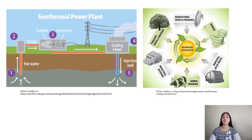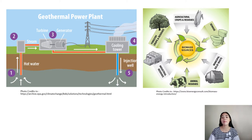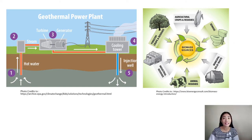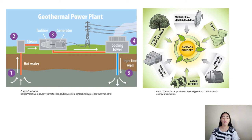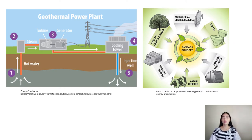In a geothermal power plant, there are two wells drilled one or two miles deep. Hot water is pumped from underground under high pressure, and when it reaches the surface, it turns into steam. That steam spins a turbine connected to a generator that produces electricity. The steam then cools in a cooling tower, converts back to water, and is pumped back underground to restart the process.